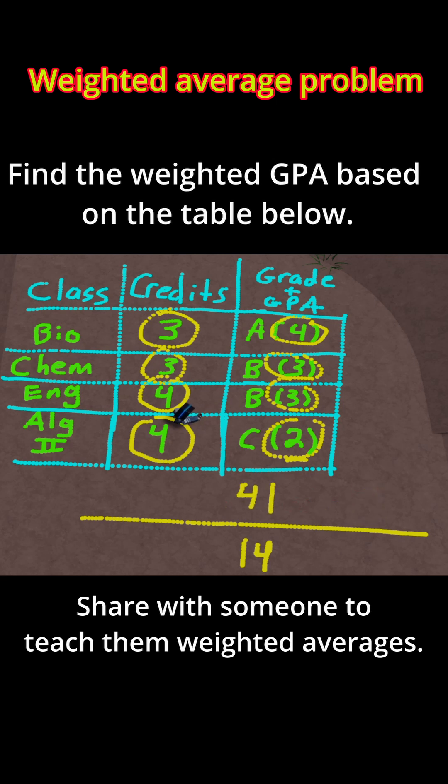Now 41 divided by 14. If you do that, that's about 2.93. So this is our weighted GPA.